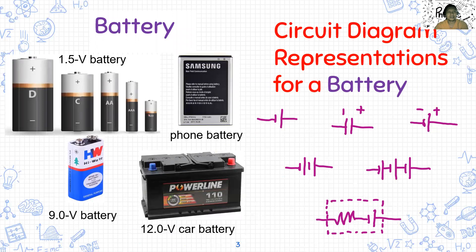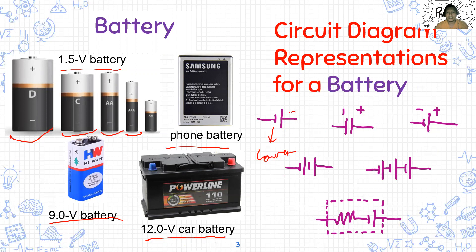First, battery. There are 1.5 volt batteries — it comes in many forms: AA, AAA, Type-C, Type-D, 9 volt battery, and then from our phones, in our cars. The circuit diagram representing the battery is like this. One side is the lower potential and the other is the higher potential, so you can see the plus or minus. We can also have a form where this one is your internal resistance.